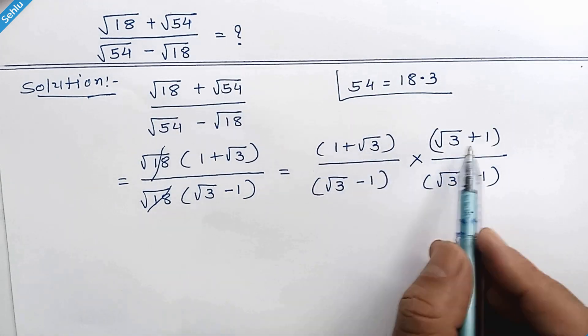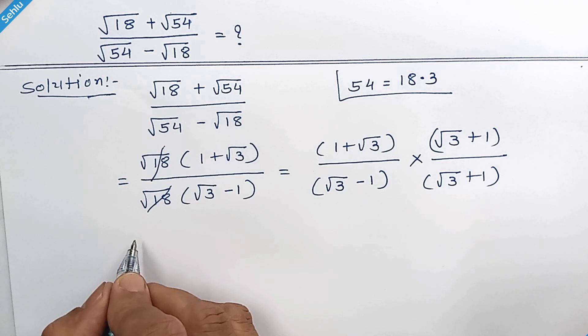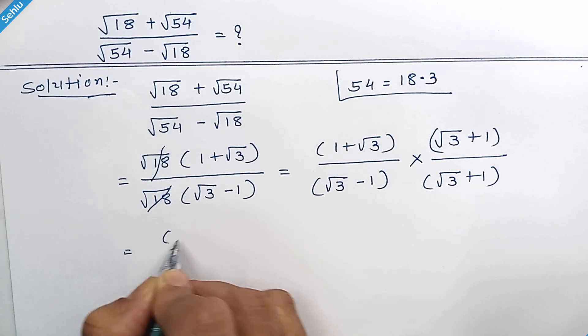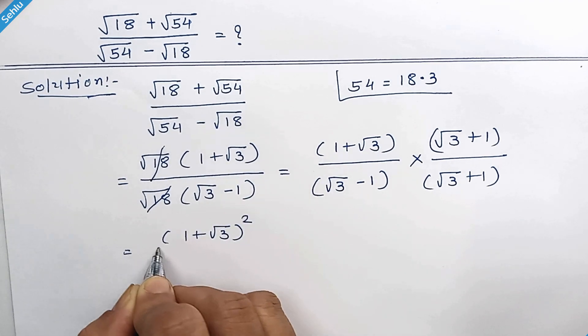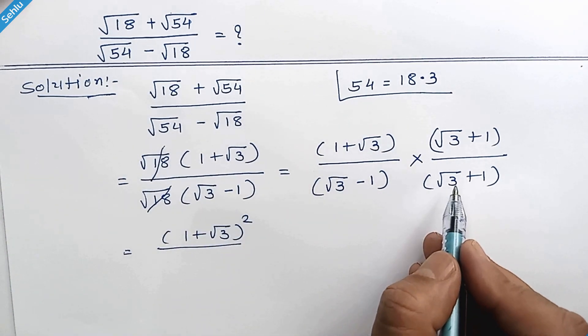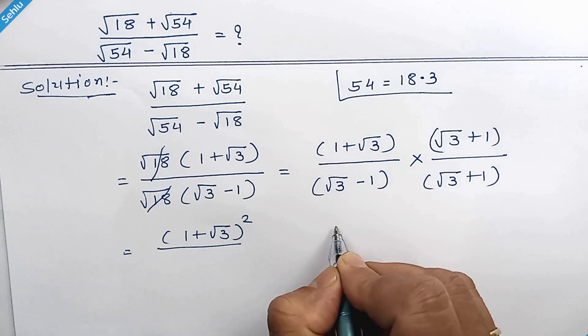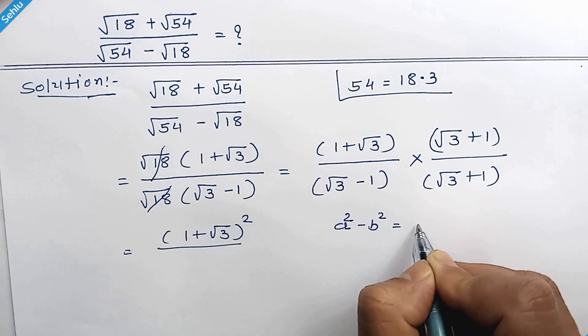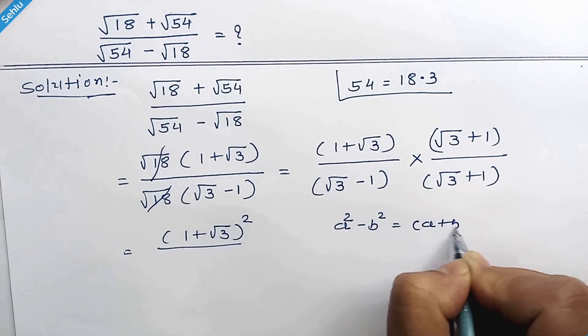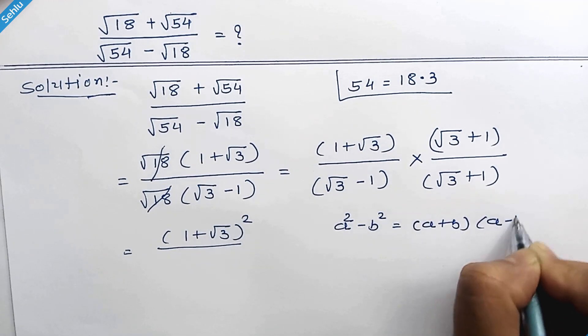Now here, these two brackets are the same, so we can write it as 1 plus square root of 3 whole squared. And this can be a result of an identity which is a squared minus b squared equals a plus b times a minus b.